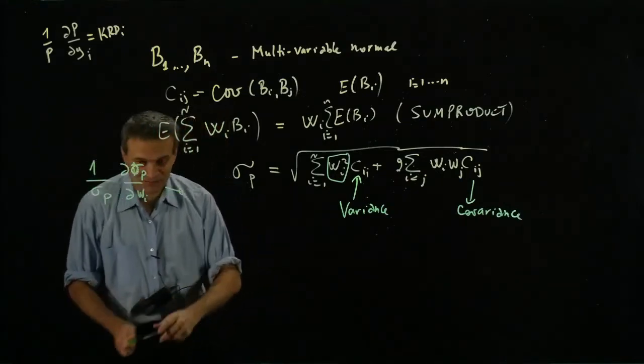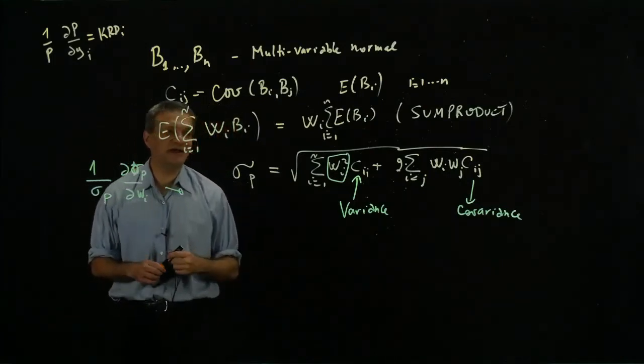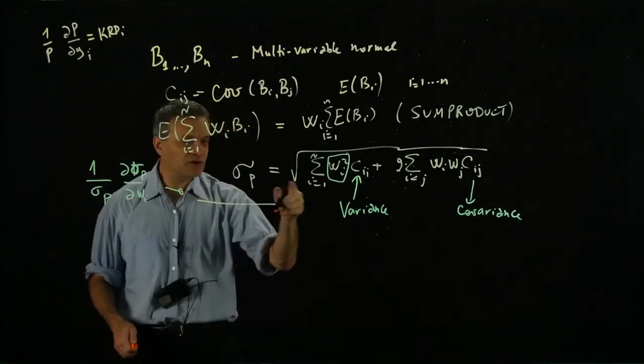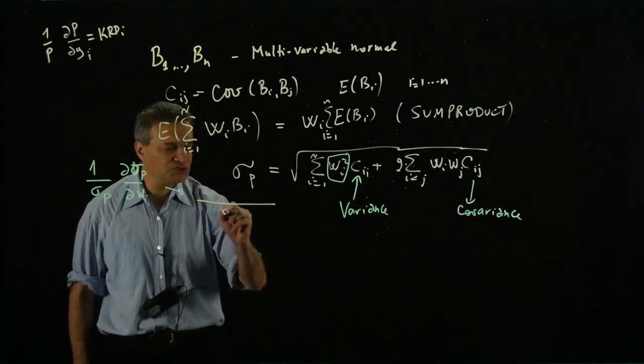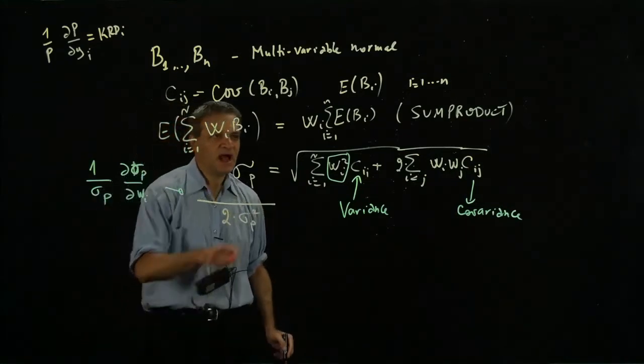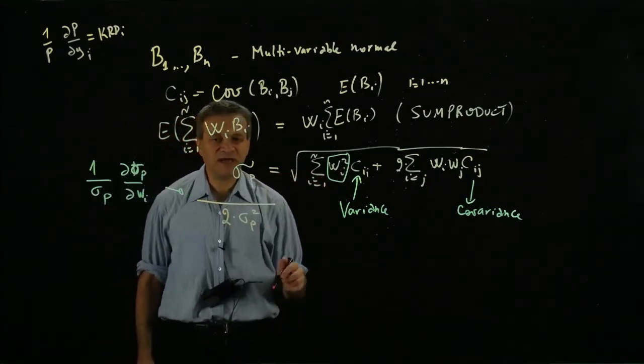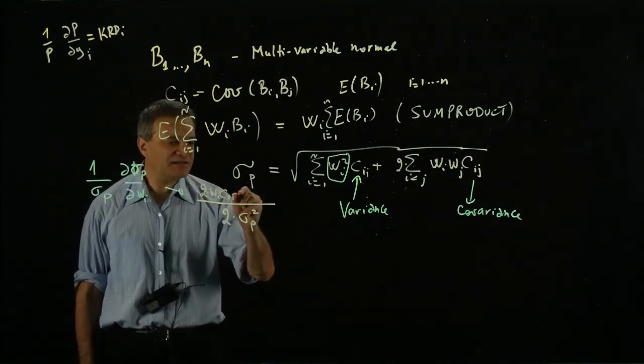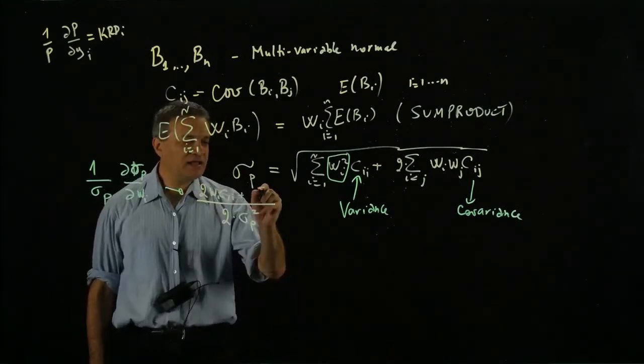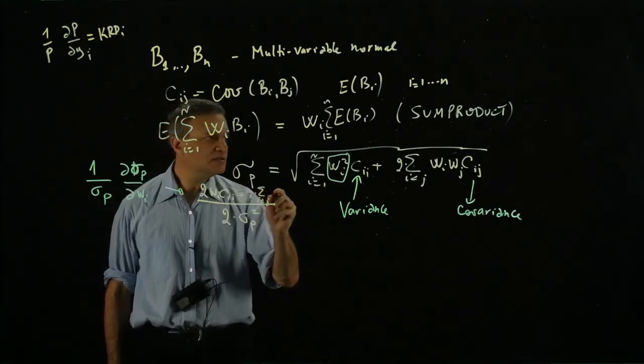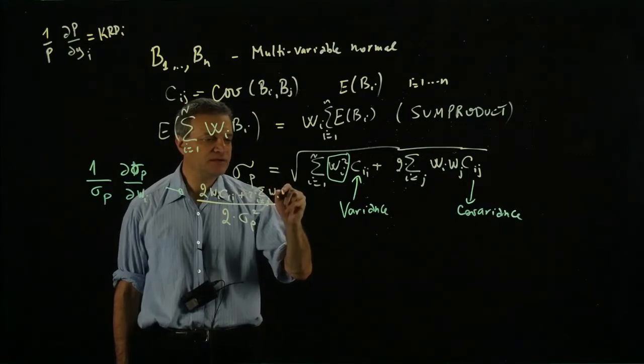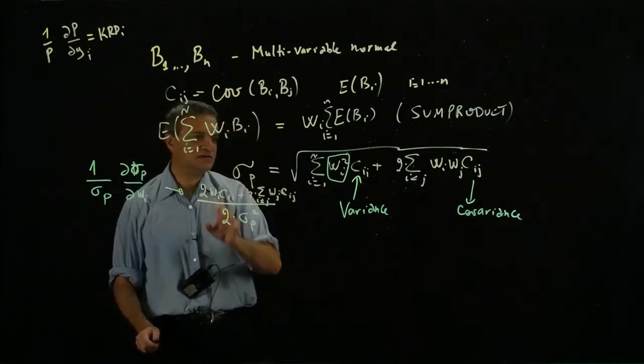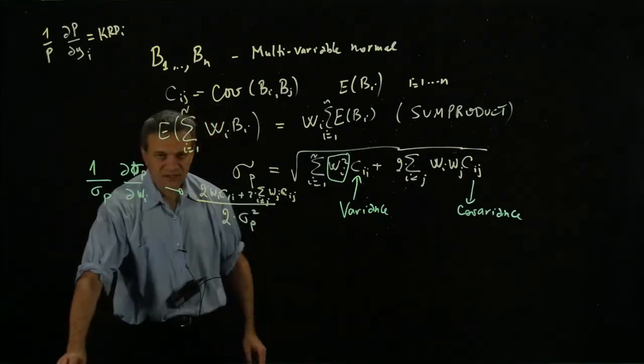Let me remind you. Because I have σp on the bottom and another σp inside, it will be 2 times σp squared. On the top we're going to get 2 times wi times cii plus 2 times the sum over j≠i of wi times wj times cij.